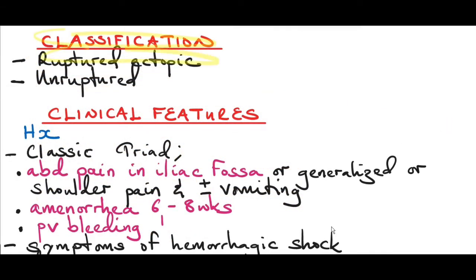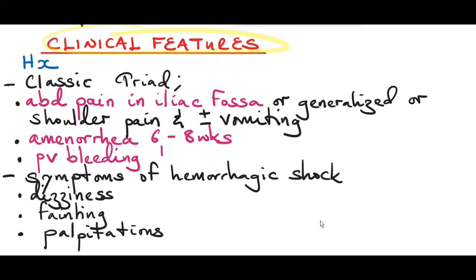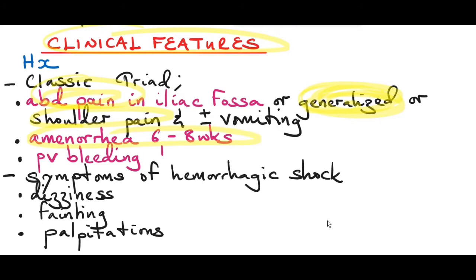Ectopic pregnancy can be classified as ruptured or unruptured. Clinical features of ectopic pregnancy: a patient will present with abdominal pain, typically pointing to the iliac fossa, at the site of the ectopic pregnancy. The pain might be generalized, especially if the ectopic pregnancy has ruptured, and may include shoulder pain, which is referred pain from the diaphragm. When an ectopic pregnancy ruptures, bleeding goes into the peritoneum and can reach the diaphragm, causing irritation. The diaphragm is supplied by the phrenic nerve, with a dermatome at C2-3-5, which corresponds to the neck and shoulder. There is also a history of amenorrhea for 6 to 8 weeks, confirmed with a pregnancy test.